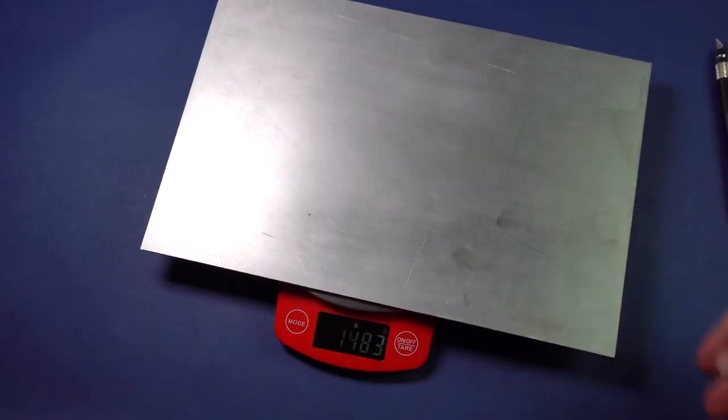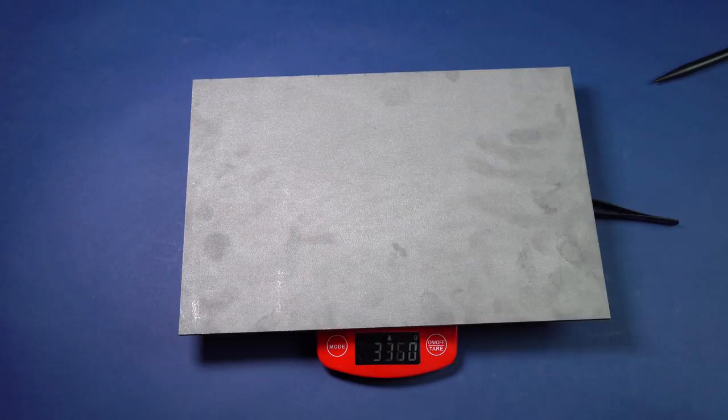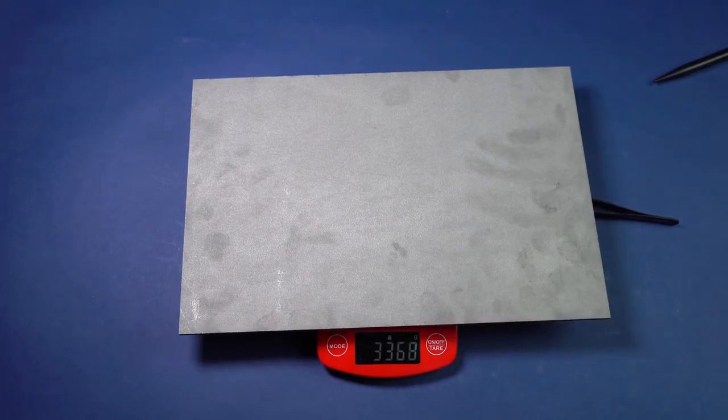Besides appearance, the density of molybdenum is two times smaller than that of tungsten.